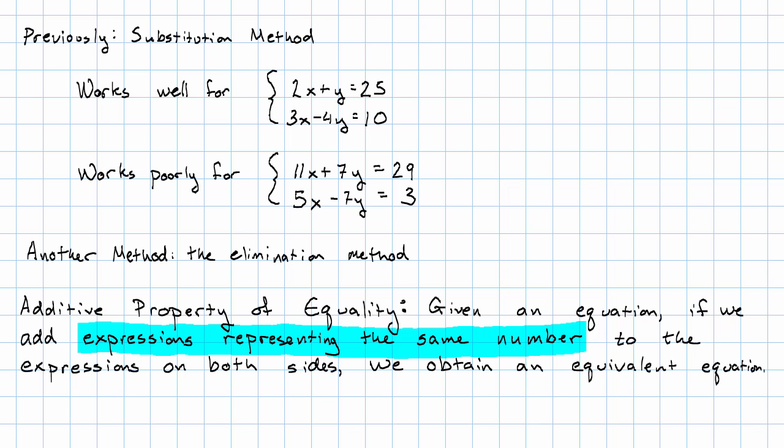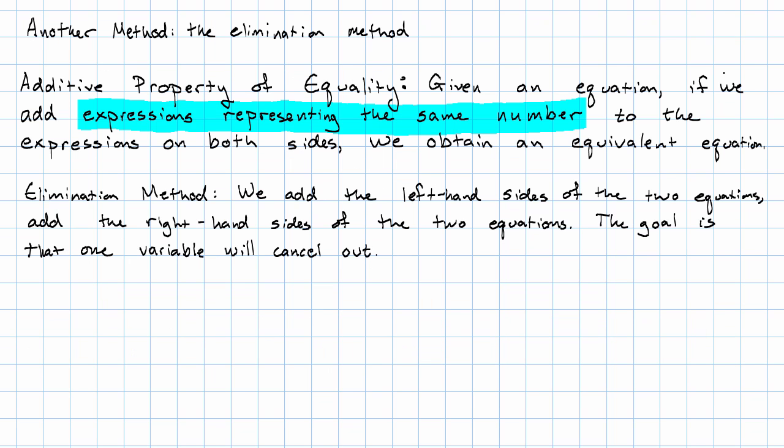Remember when we met this property a long time ago? We worded it in a weird way. We didn't say we can add the same thing to both sides of an equation. We said that we can add expressions representing the same number to both sides of an equation. That is the basis of the elimination method. Here's what we're going to do. In the elimination method, we'll add the left-hand sides of the two equations and add the right-hand sides of the two equations with the goal that one of the variables will cancel out.